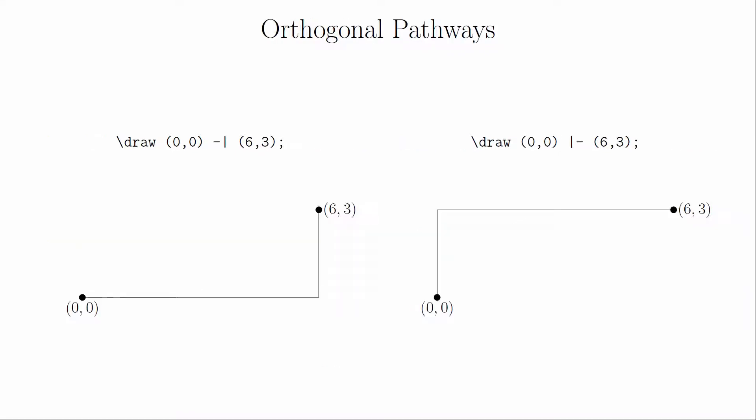When connecting two points, we have only used the double dash to draw a straight line between them. Instead of connecting the two points directly, you may sometimes want to connect them using a combination of a horizontal and a vertical line. To do this, you simply replace the double dash with dash pipe or pipe dash, depending on what direction you want to go first.